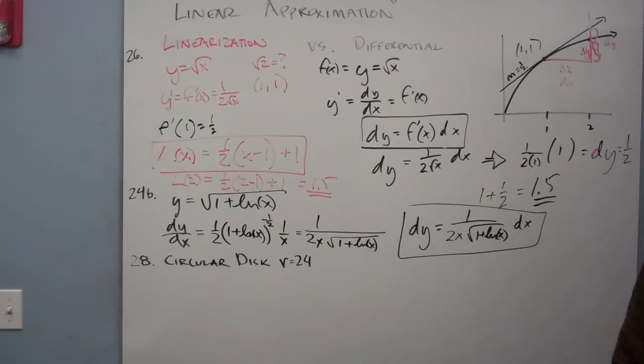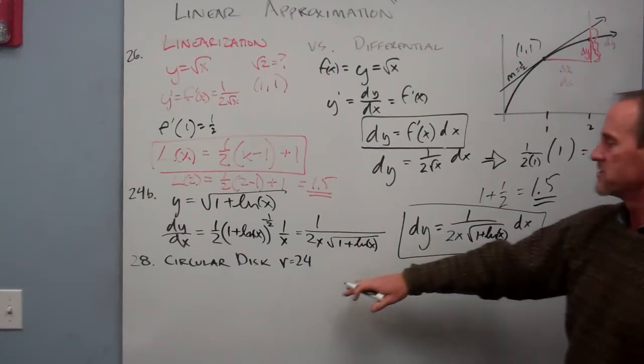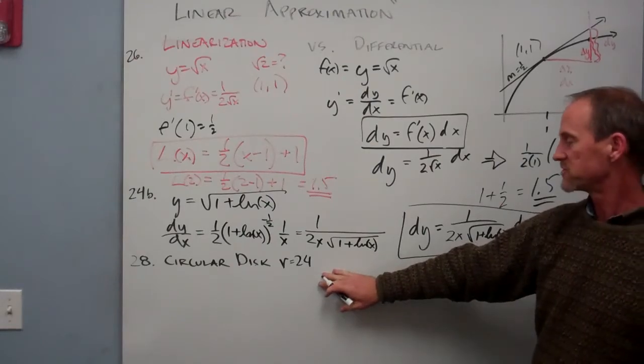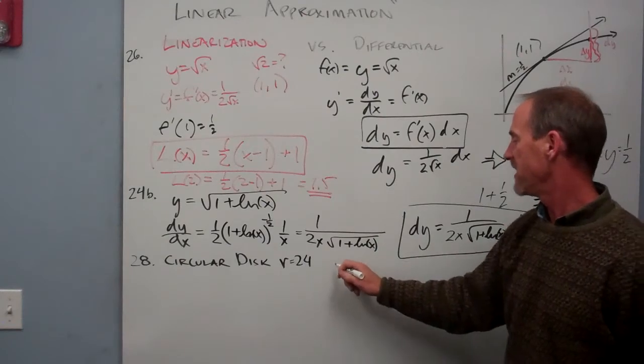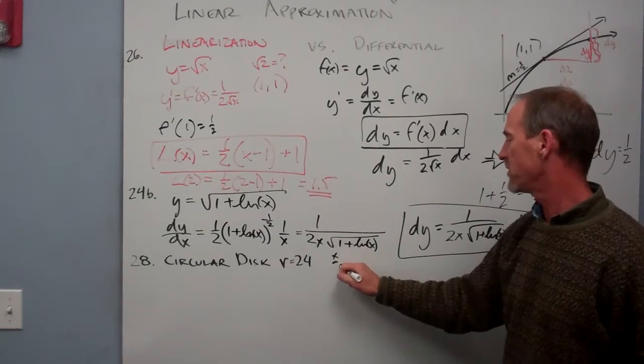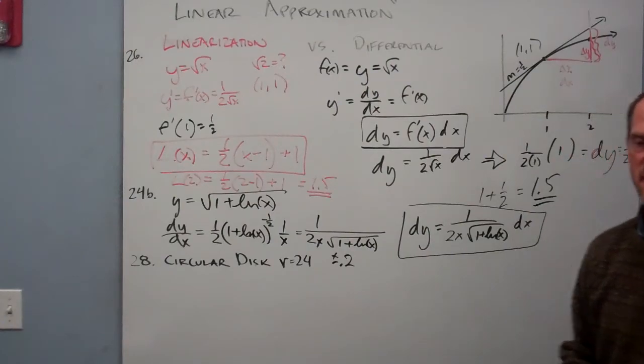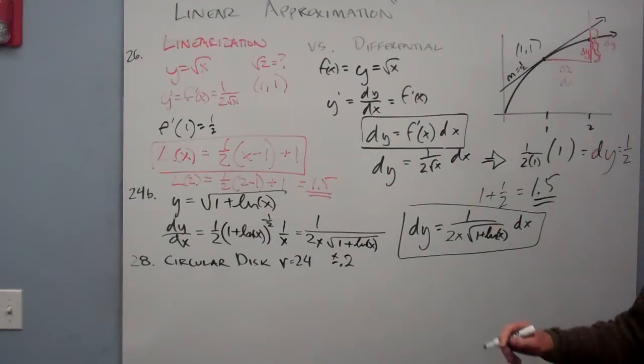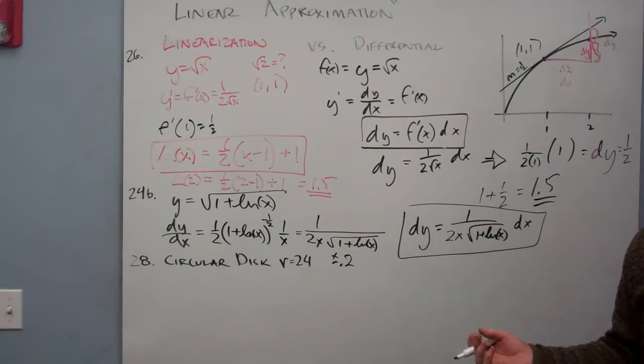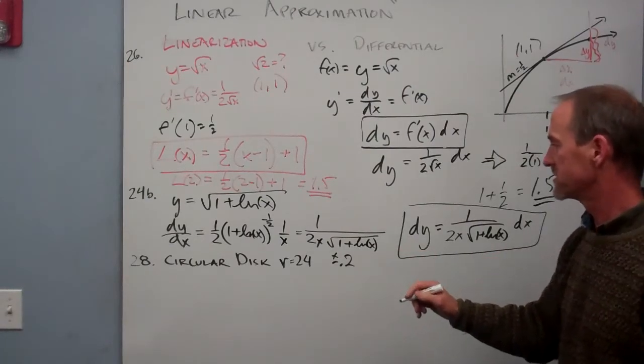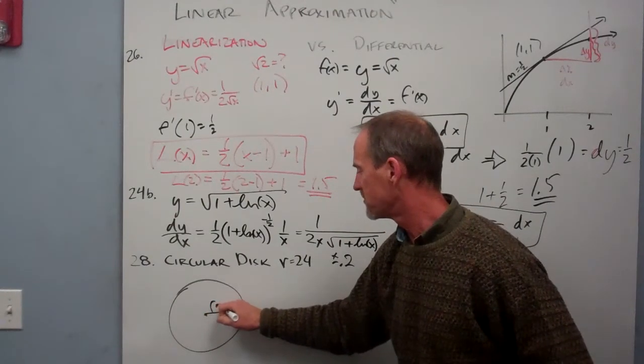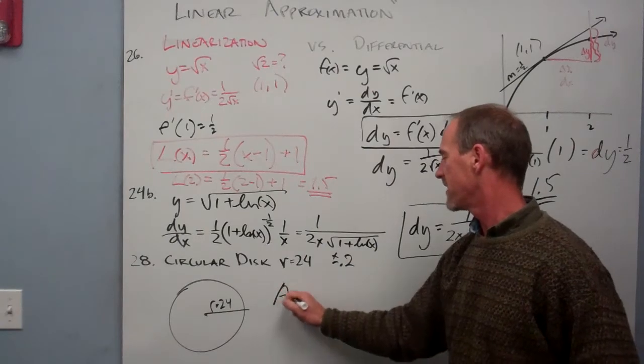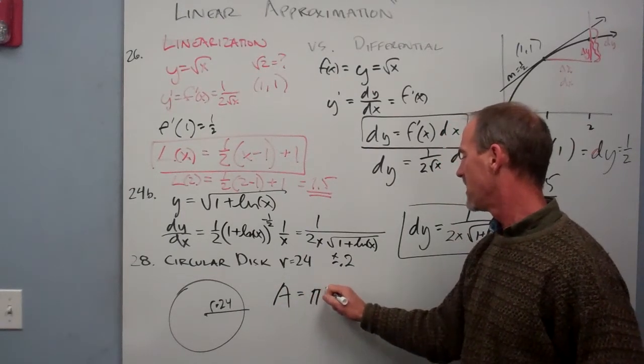Okay, so now it has applications when it comes to actually working with measurements of things. It's a handy way to deal with error. So in problem number 28, we're supposed to imagine a circular disk that's been measured to a radius of 24 and an error that's plus or minus 0.2. I don't know what the units are, centimeters or something like that. So can we find then the corresponding error in the area of this disk? So this is our circular disk, and there's our radius, r equals 24.